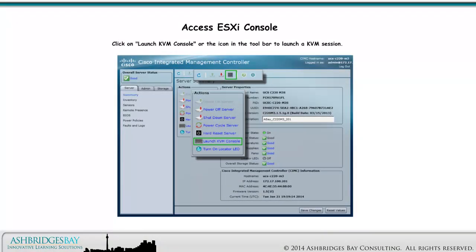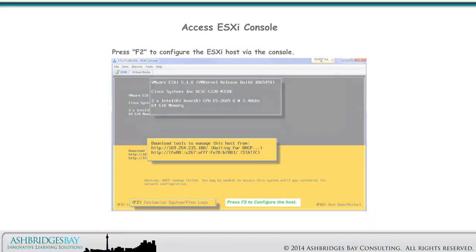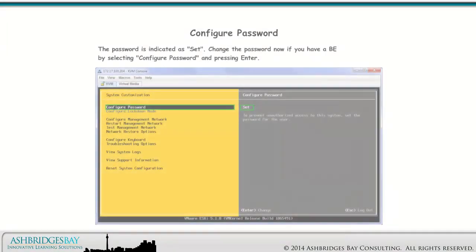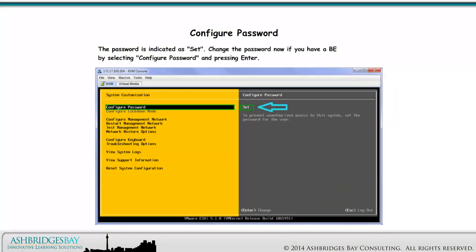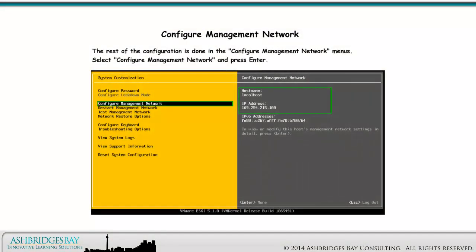Click on Launch KVM Console or the icon in the toolbar to launch a KVM session. Press F2 to configure the ESXi Host via the console. The password is indicated as set. Change the password now if you have a BE by selecting Configure Password and press Enter.